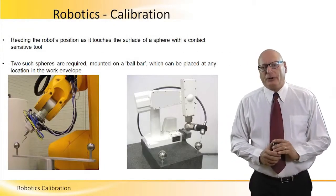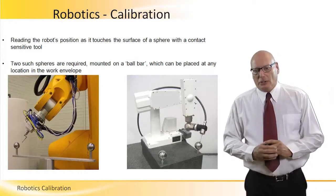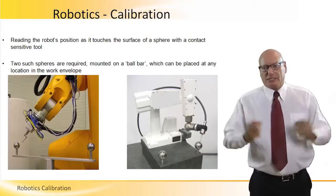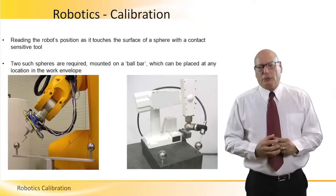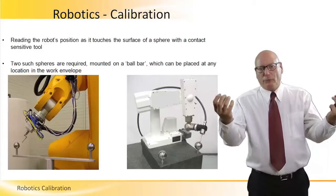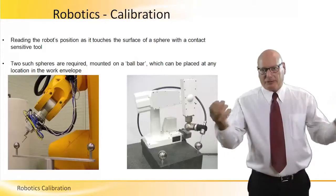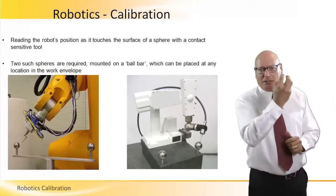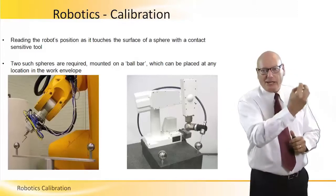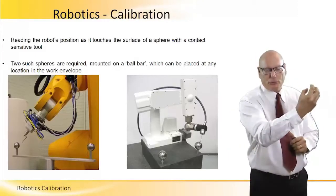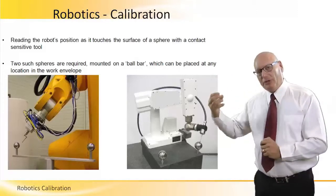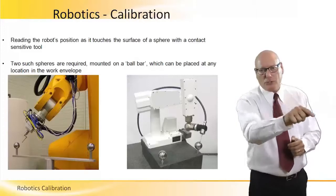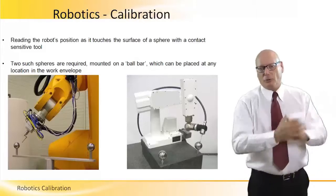One way to calibrate a robot is by placing a mechanical structure in front of the robot with two balls separated by a known distance. Each ball's mathematical formula is stored in the computer's memory, and the robot moves toward the first ball.